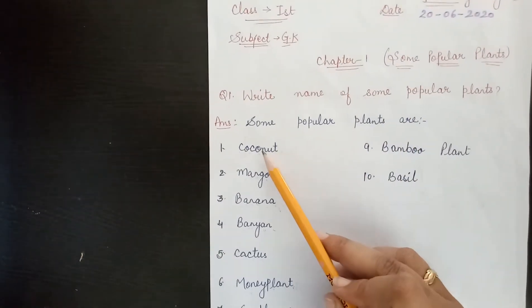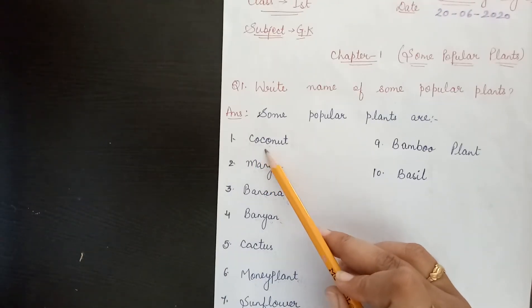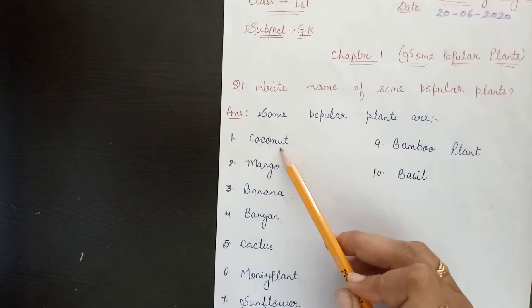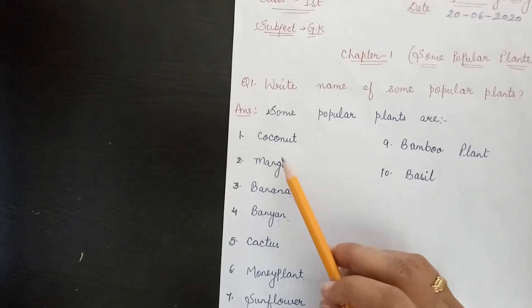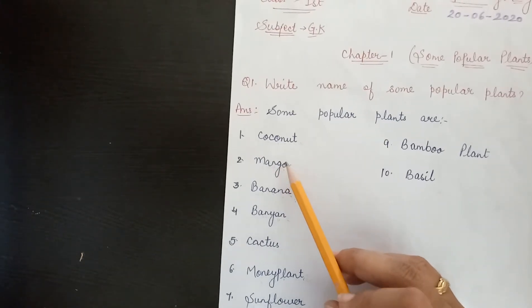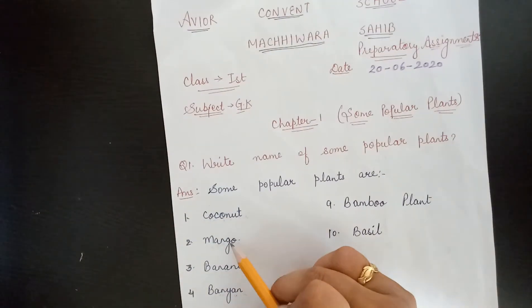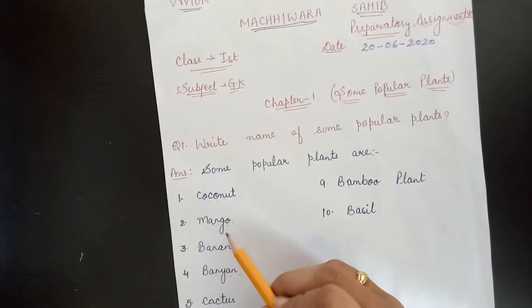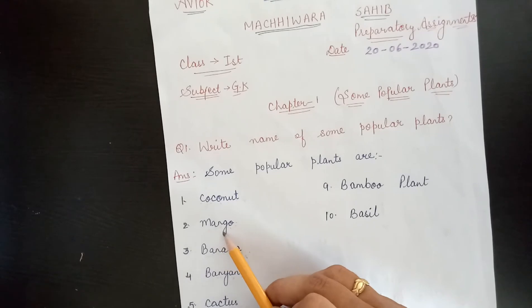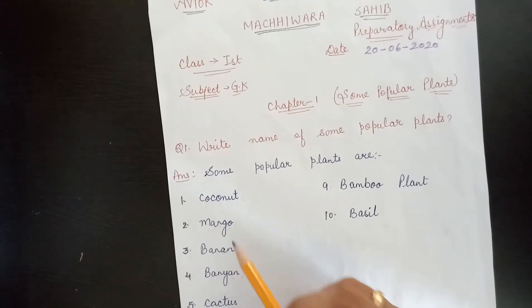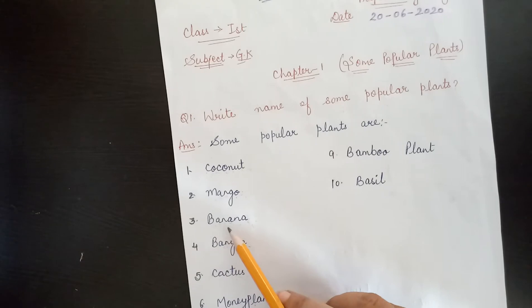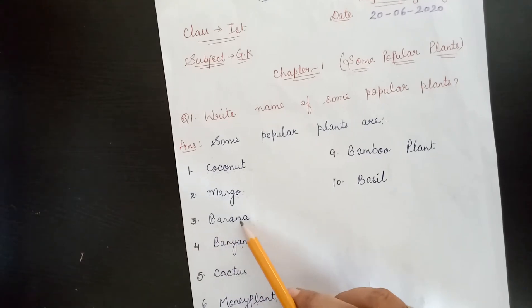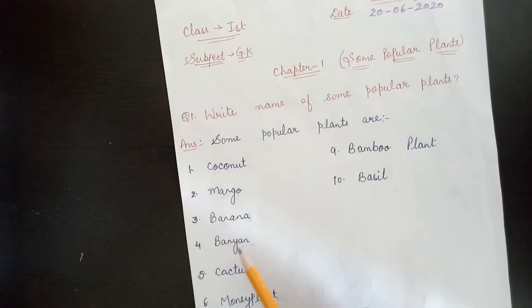Coconut — C-O-C-O-N-U-T. Coconut. Mango — M-A-N-G-O. Mango. Next is Banana — B-A-N-A-N-A. Banana.